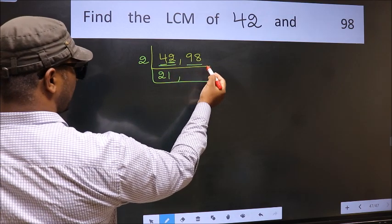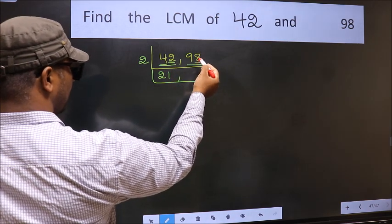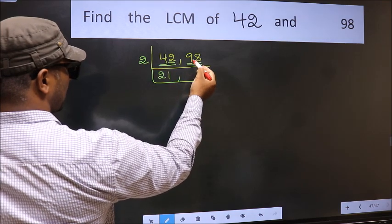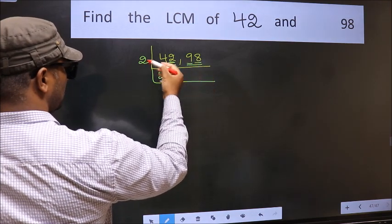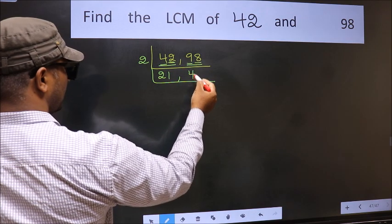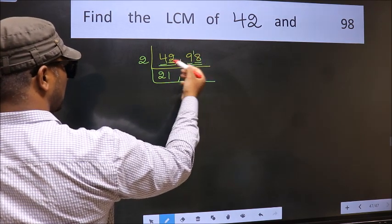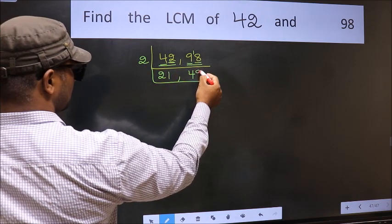Now the other number 98. Last digit 8, even, so this is divisible by 2. First number 9, a number close to 9 in 2 table is 2 times 4 is 8. 9 minus 8 is 1, 1 carried forward 18. When do we get 18 in 2 table? 2 times 9 is 18.